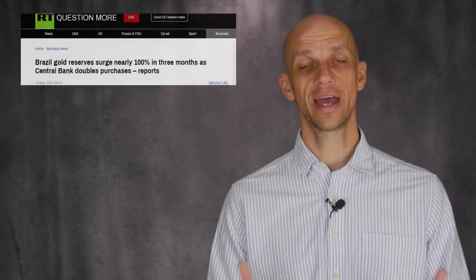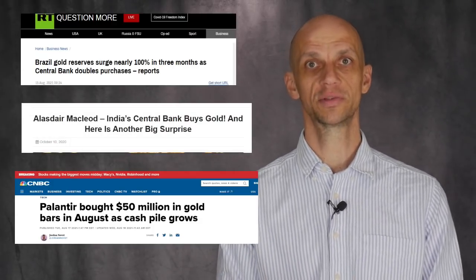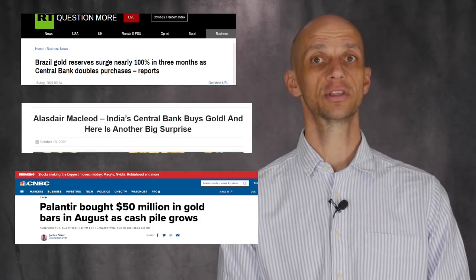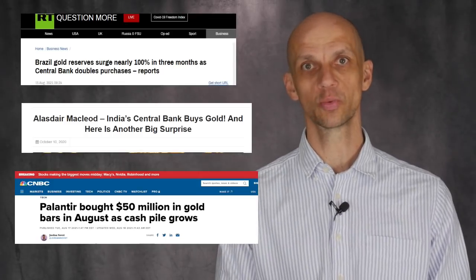And so what are the insiders, the central banks doing? Well, they're adding Brazil and India most recently, but of course also Palantir Technologies in helping them to prepare for potential black swan events.